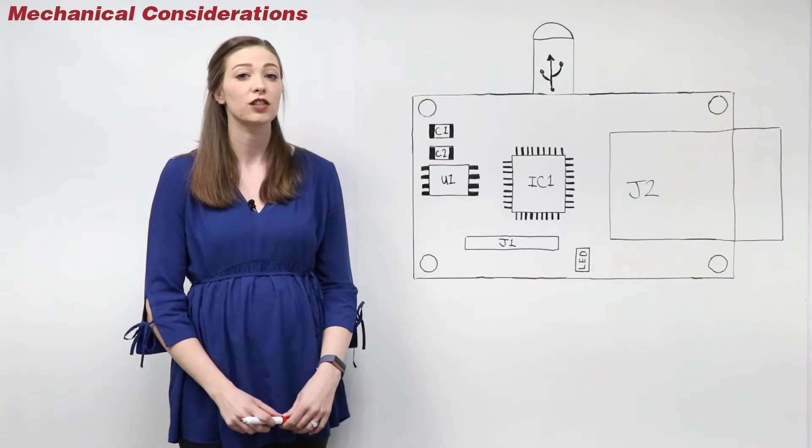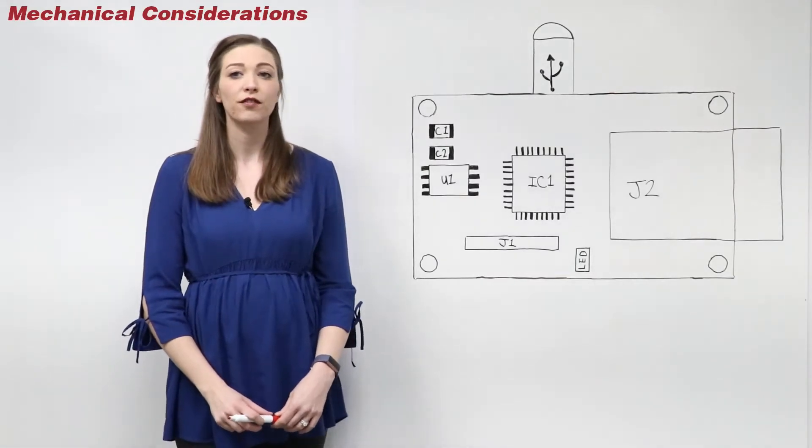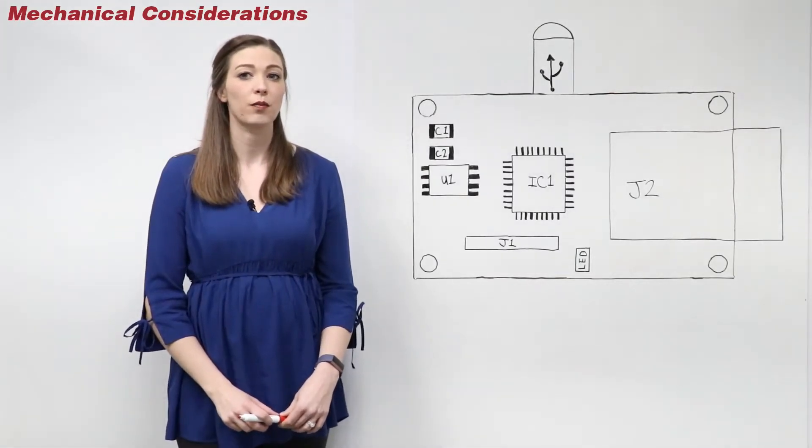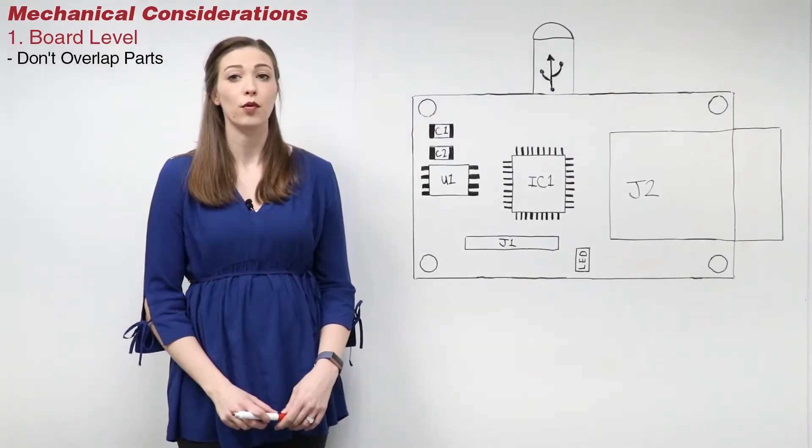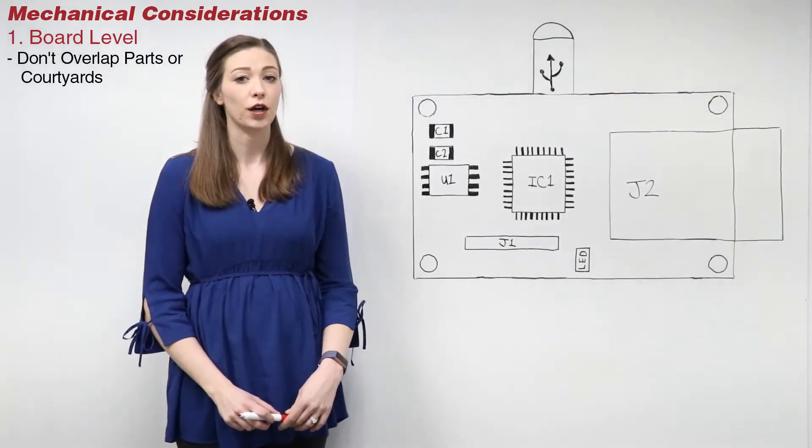Let's first look at the mechanical constraints. The first mechanical aspect to consider is the board level interference. Components should not touch or overlap on the board. This includes the placement courtyards.